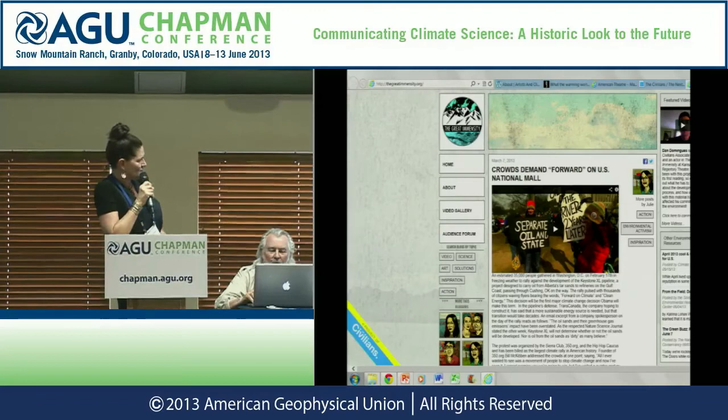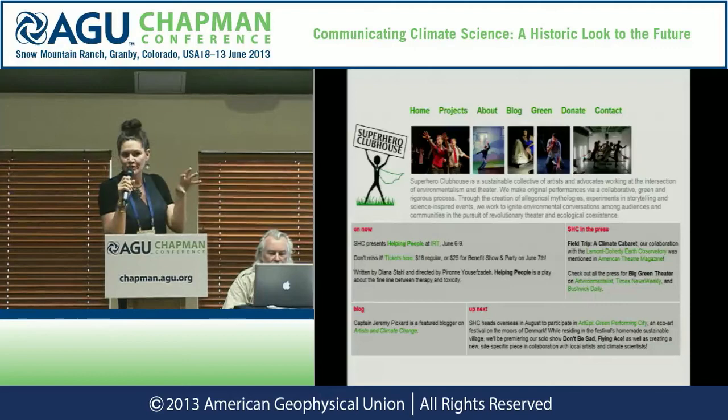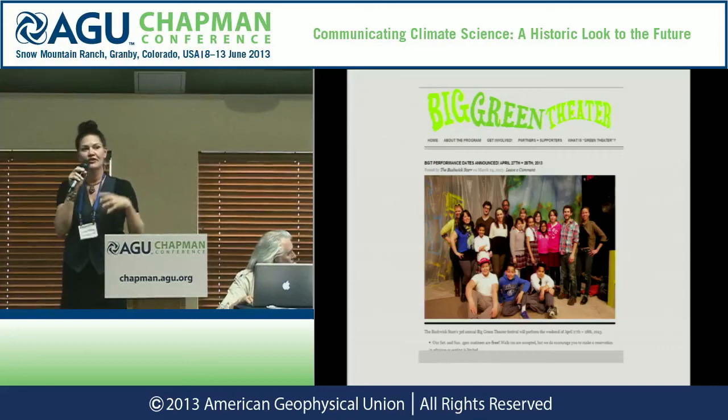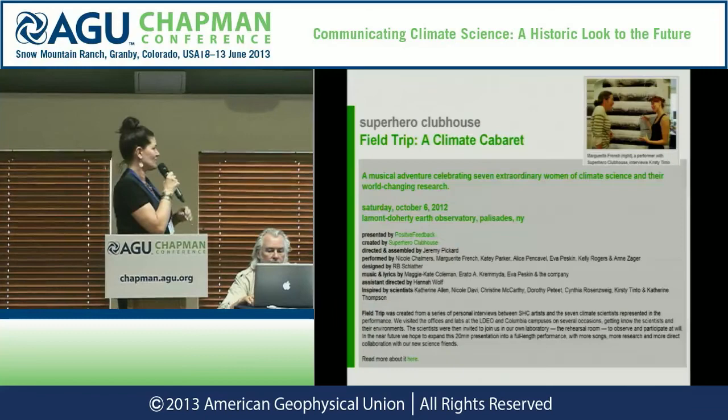Another group is called Superhero Clubhouse. Not only do they produce original plays for adult audiences, they also produce plays with children. Here's the Big Green Theater — every summer they get a group of children who write their own plays about climate change, which are then put on by the organization. This is in Brooklyn. They also did a climate science cabaret inspired by climate scientists, featuring five climate scientist women.